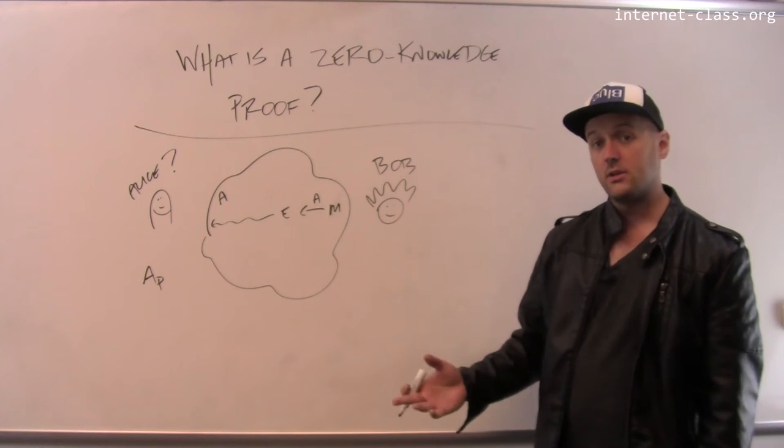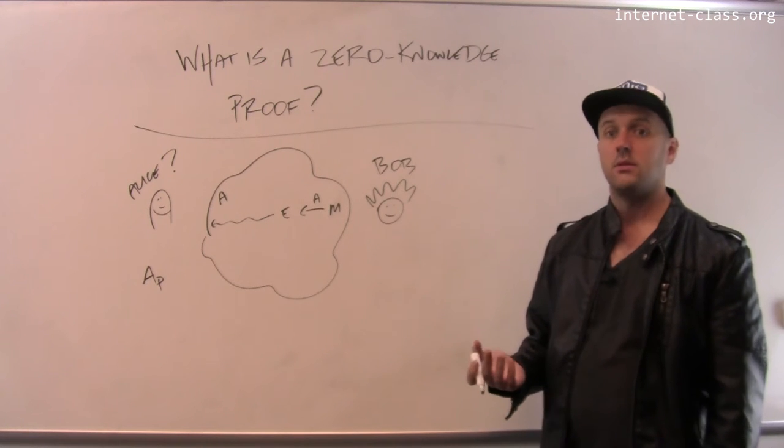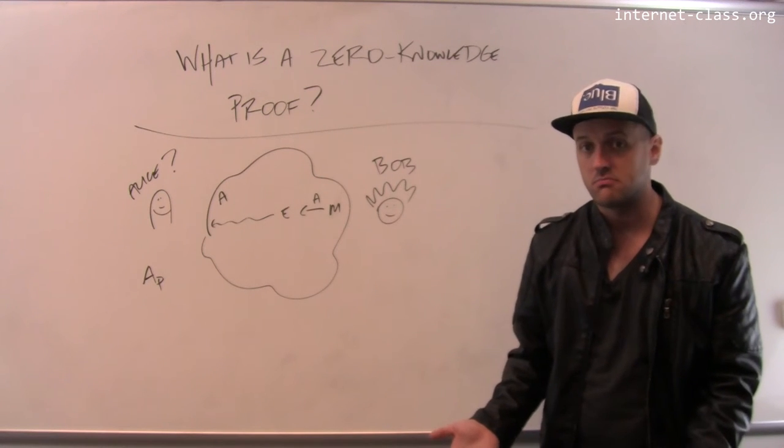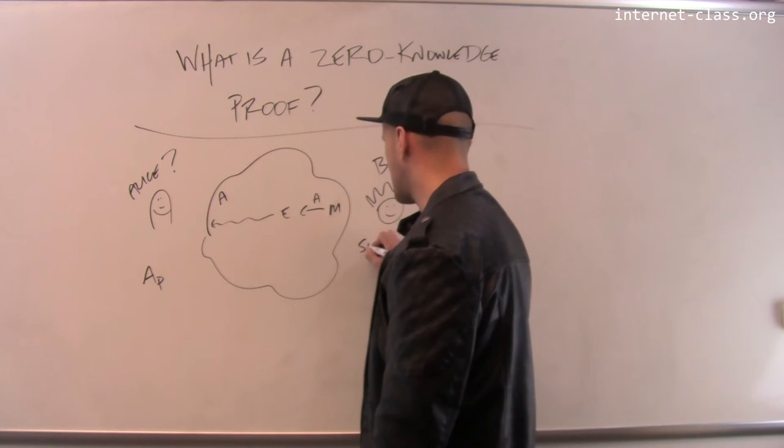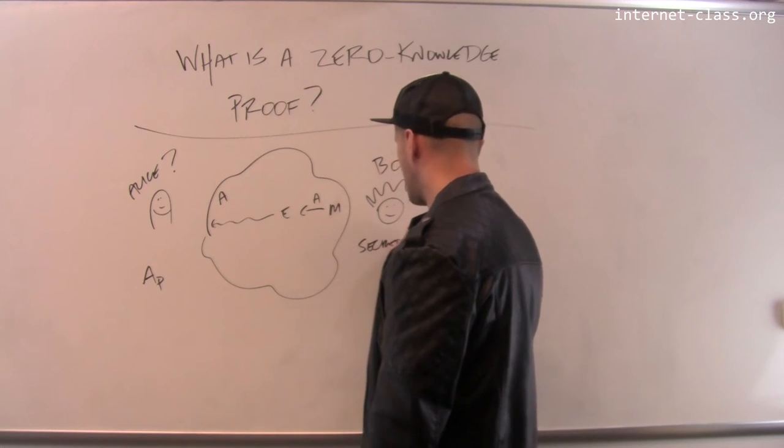And then what he's going to do is he's going to ask Alice, what's the message that I sent you? So he might say the text of the message might be secret message.